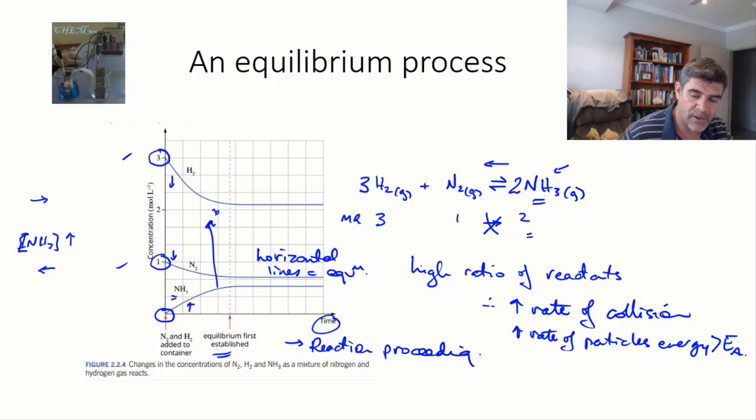Notice also from this diagram that equilibrium does not mean equal amounts of the hydrogen, the nitrogen, or the ammonia. All we have is a horizontal line representing that the rates are the same and therefore there's no further change in the concentration of each of these species.